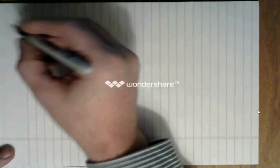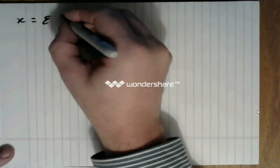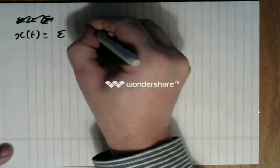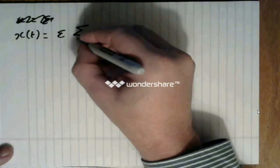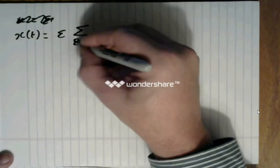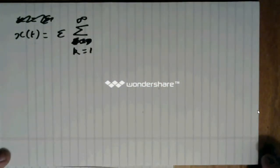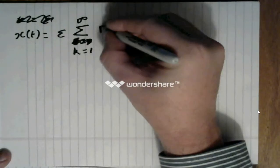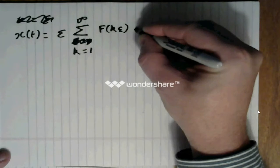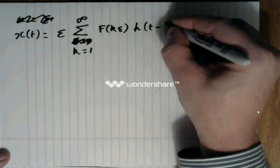We can then write that x, which is the sum of the xi's, will be equal to epsilon times the sum from k is equal to 1 to infinity of f of k epsilon times h of t minus k epsilon.